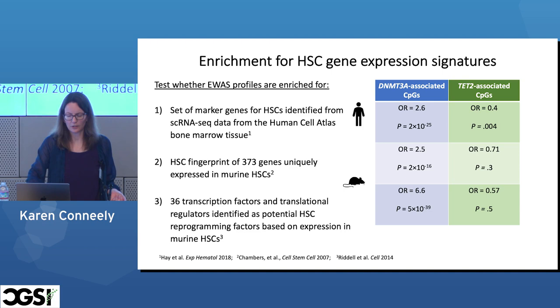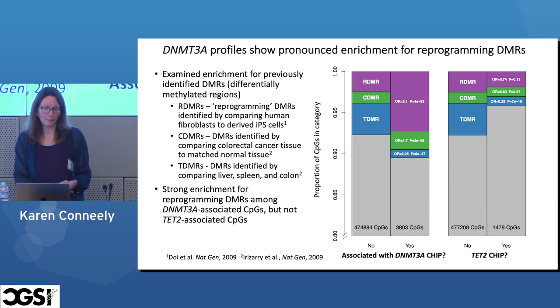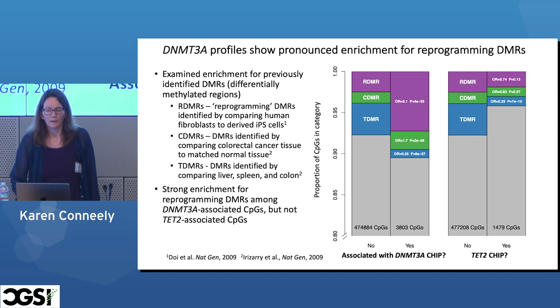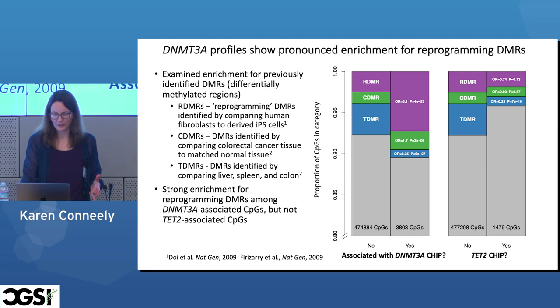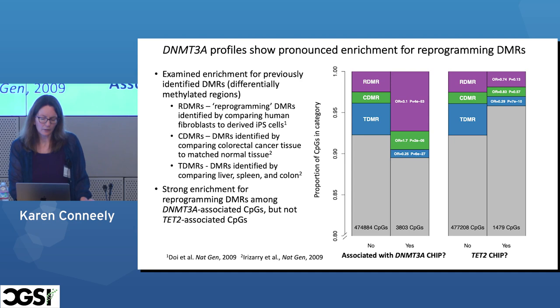Because of the interesting reprogramming result, we also compared our methylation profiles to previously identified differentially methylated regions associated with reprogramming, as well as sets associated with cancer and with tissue differences. The DNMT3A CpG sites are very enriched for reprogramming-specific regions, while the TET2 sites are not. Both are depleted for tissue-specific DMRs — which makes sense since those were generated by comparing liver, spleen, and colon, not relevant to whole blood. We see a slight enrichment for cancer DMRs among our DNMT3A results.